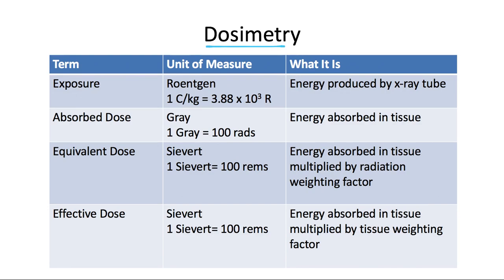Dose symmetry involves the calculation and assessment of ionizing radiation exposure and dose received by the patient. The term exposure refers to the amount of energy produced by the x-ray tube — how much ionizing radiation is produced. This is measured in roentgens, the traditional unit of radiation exposure measured in air, but it can be converted to coulombs per kilogram, which is the SI unit.